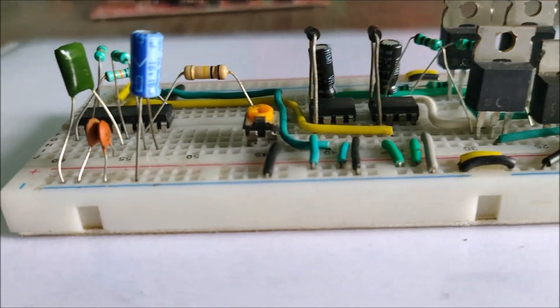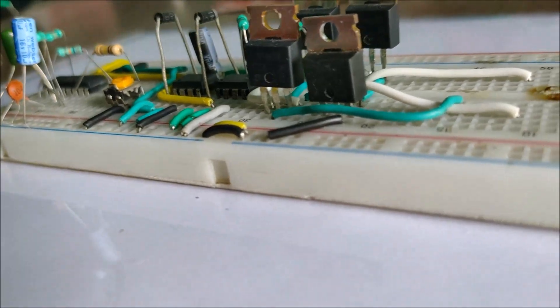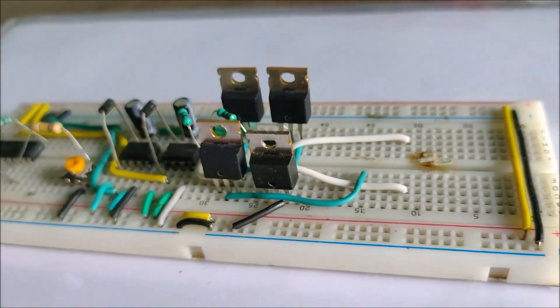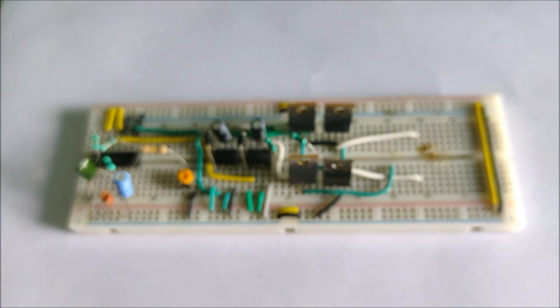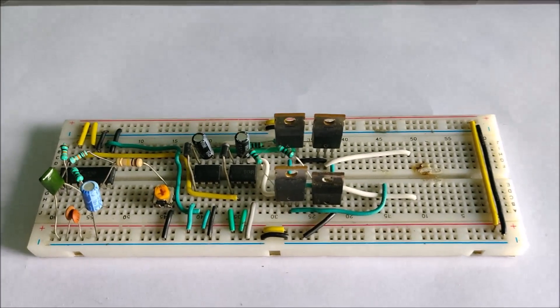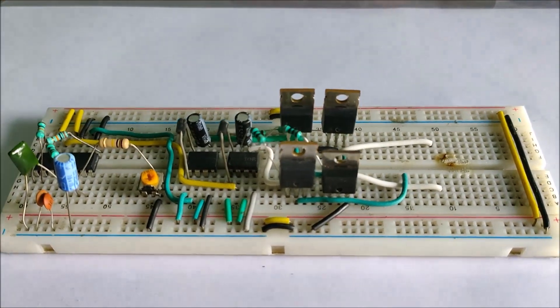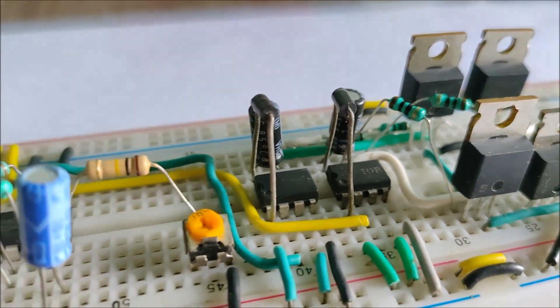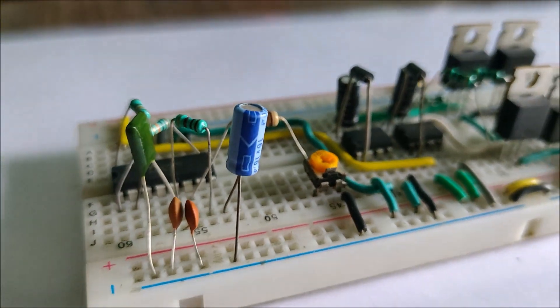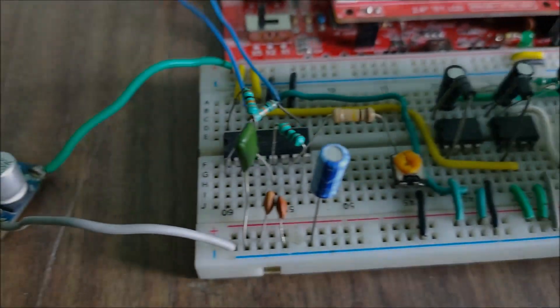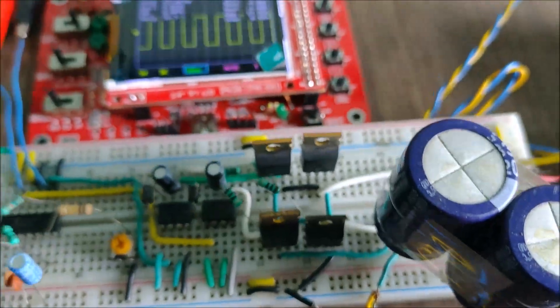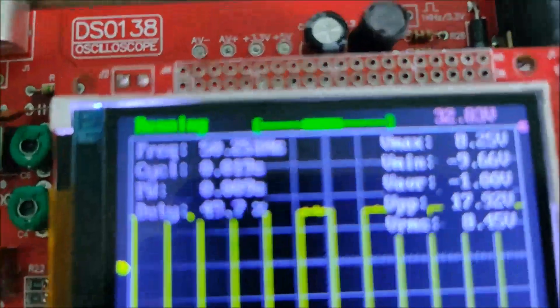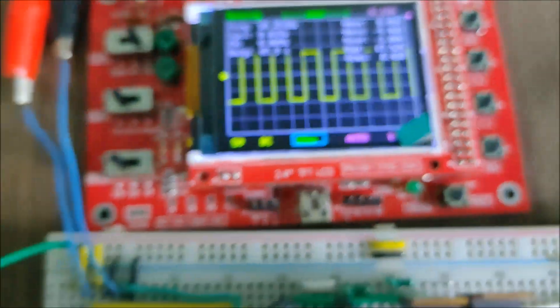Before we begin the soldering process, I decided to take all the components and fix it on a small breadboard to test out the circuit and make any changes if required. Here you can see my arrangement of the oscillator, the MOSFET drivers and the H-bridge consisting of four IRF840 N-channel MOSFETs. This is what my entire breadboard setup looks like with the capacitors in place. I've also attached a small oscilloscope to measure the output frequency and set it to 50 Hz.